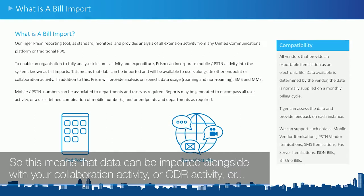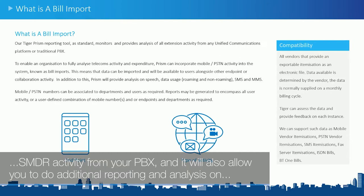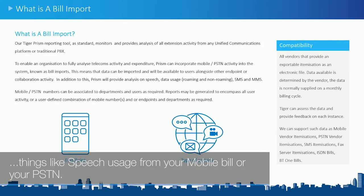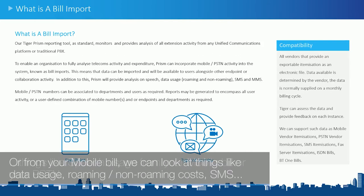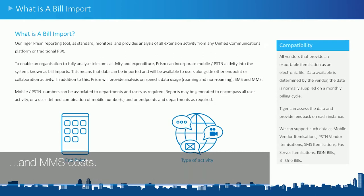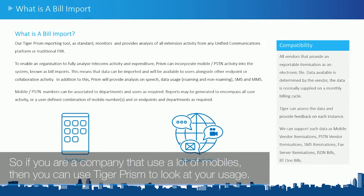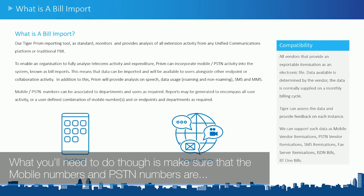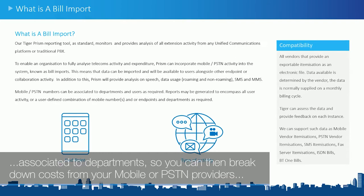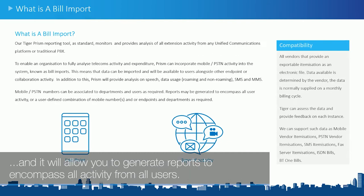This means that data can be imported alongside your collaboration activity, CDR activity, or SMDR activity from your PBX. It also allows you to do additional reporting and analysis on things like speech usage from your mobile bill or PSTN. We can look at things like data usage, roaming, non-roaming costs, and SMS and MMS costs. If you are a company that uses a lot of mobiles, you can use TigerPRISM to look at your usage. You'll need to make sure that mobile numbers and PSTN numbers are associated to departments so you can break down costs from your providers and generate reports to encompass all activity from all users.